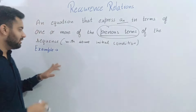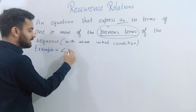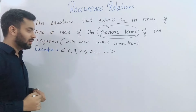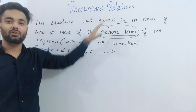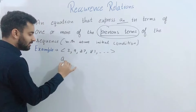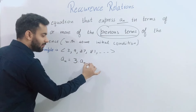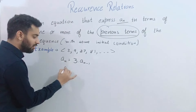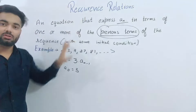Now let us take another example. Suppose we have a geometric progression: 3, 9, 27, 81, and so on. We will express this geometric progression in the form of a recurrence relation. The nth term A(N) can be written as 3 into A(N-1), with some initial condition A(0) equal to 3. So this satisfies the recurrence relation definition.